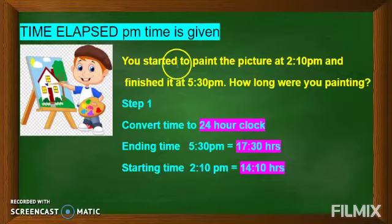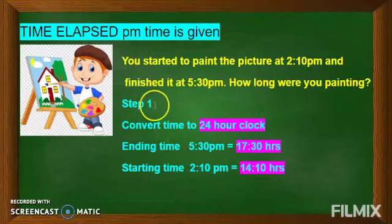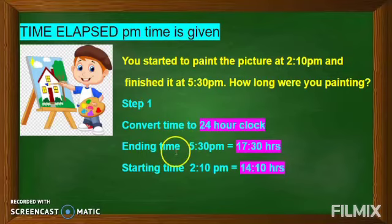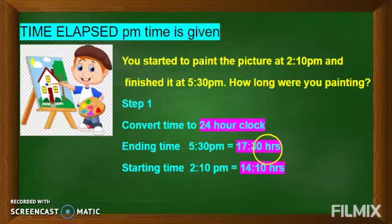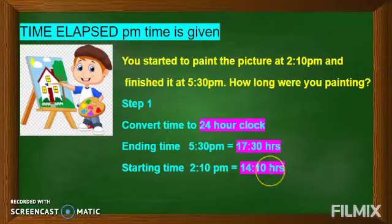The question is: you started to paint the picture at 2:10 PM and finished it at 5:30 PM. How long were you painting? Step 1 — always remember, whenever you have to find out the duration of the activity, you will convert the time into the 24-hour clock. The ending time, that means the time at which you finished the painting, was 5:30 PM, which in 24-hour clock is 17:30 hours. The starting time was 2:10 PM, which in 24-hour clock is 14:10 hours.